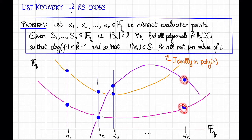Okay, so that's our problem. We're given some possible values for each evaluation point. We want to find all the polynomials that go through enough of those points, and we want to do it efficiently. How are we going to do this? I claim we actually already have the answer, so pause the video now and think about it. How would you do this efficiently?